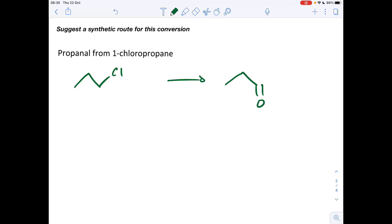So what we need to do is convert this into propan-1-ol. And then we can convert the propan-1-ol into the propanal. So we'll call this step 1 and we'll call this step 2.